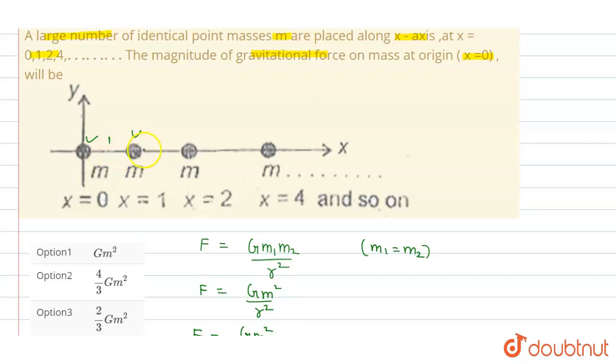This will become 2, and further it will change accordingly. So capital G m squared upon 2 squared, and capital G m squared by 3 squared...